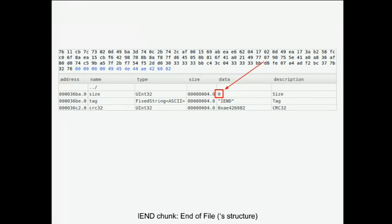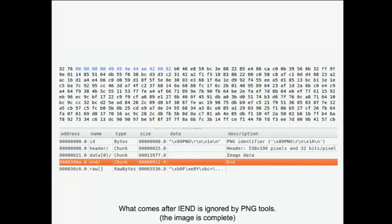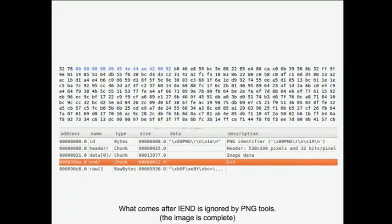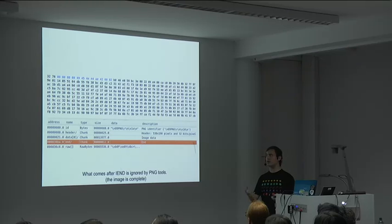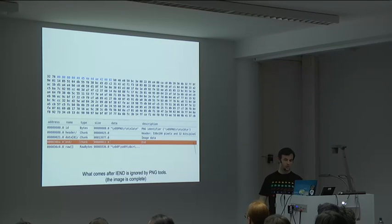Then there's an end chunk. Its purpose is to tell the parser: the end is reached, don't parse any further. On the Google picture it's like this — but if you add a lot of data after it, the file is still valid, because at some point you say 'this is the end of my file.' That's why there is an end chunk. Whatever comes after the end chunk is just ignored by the parser — it doesn't waste any more time processing the file.